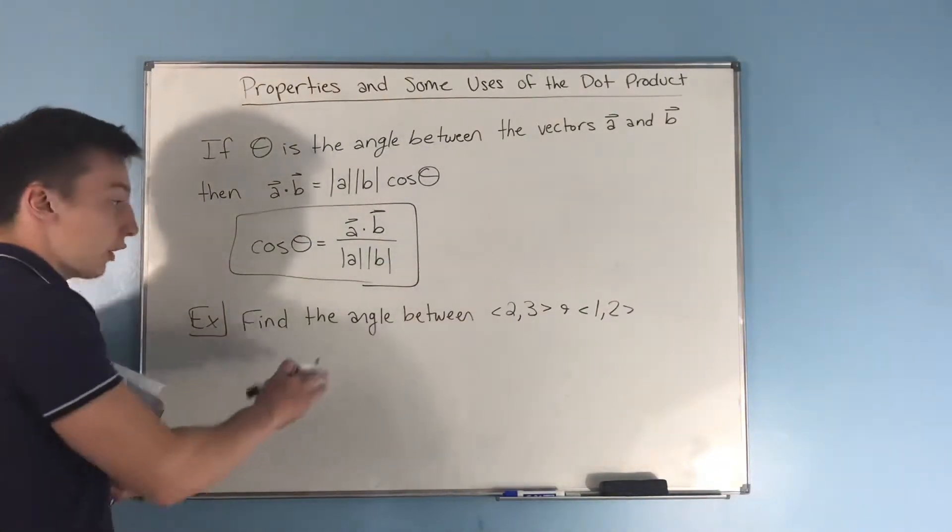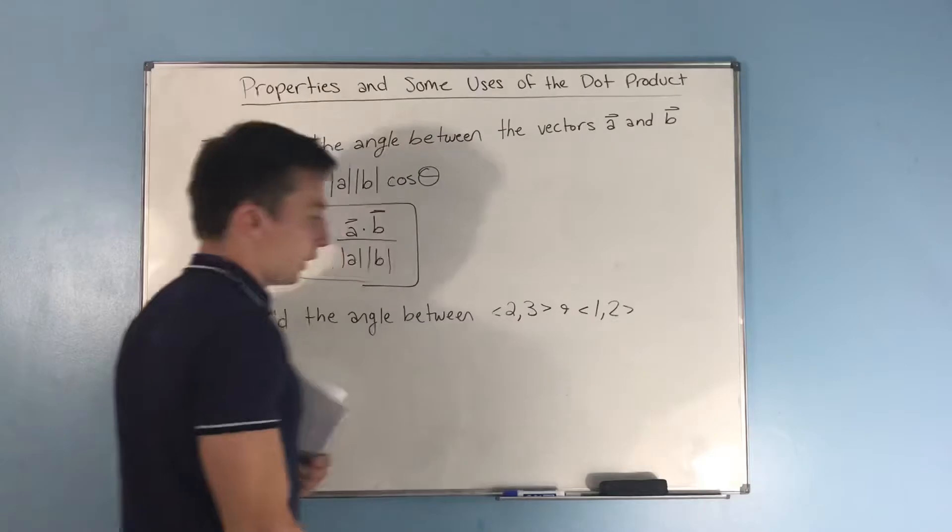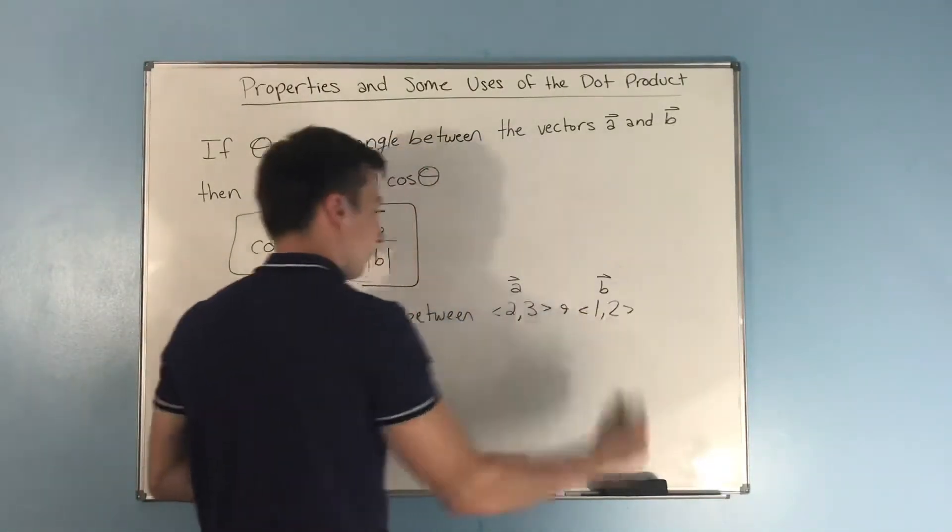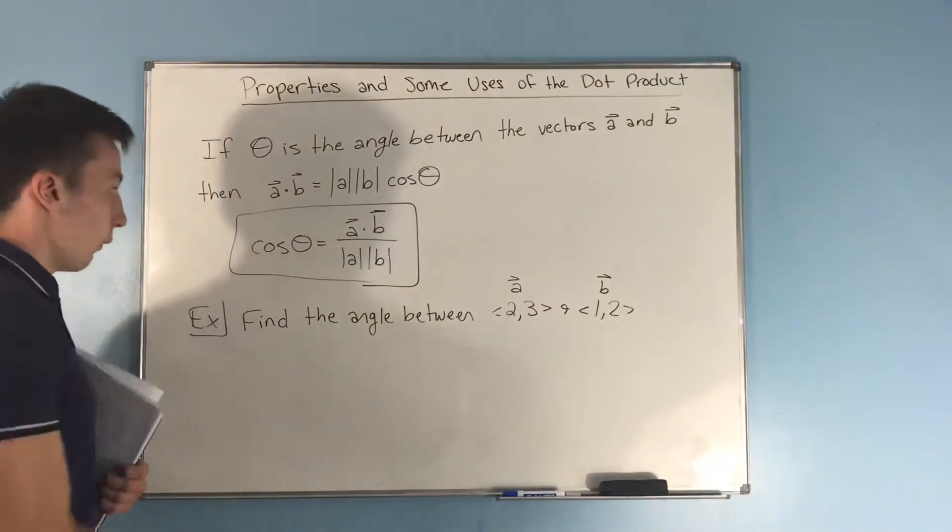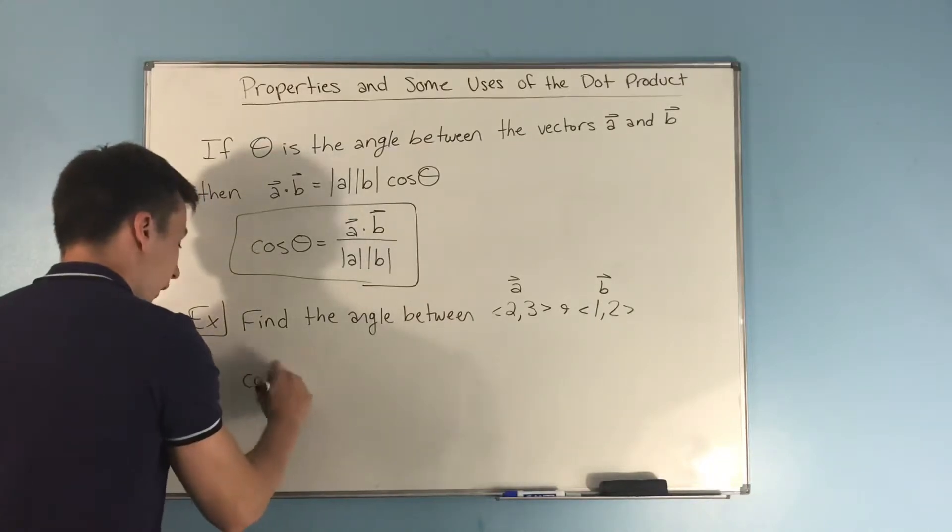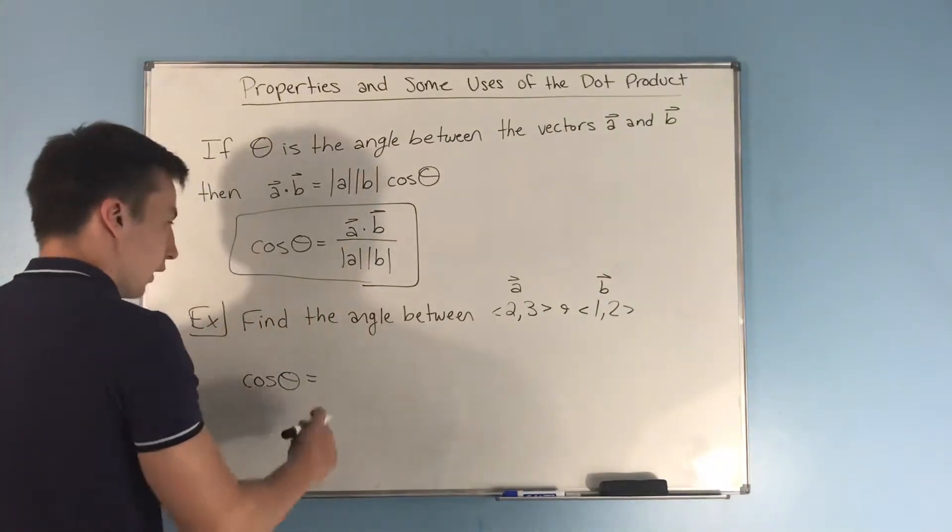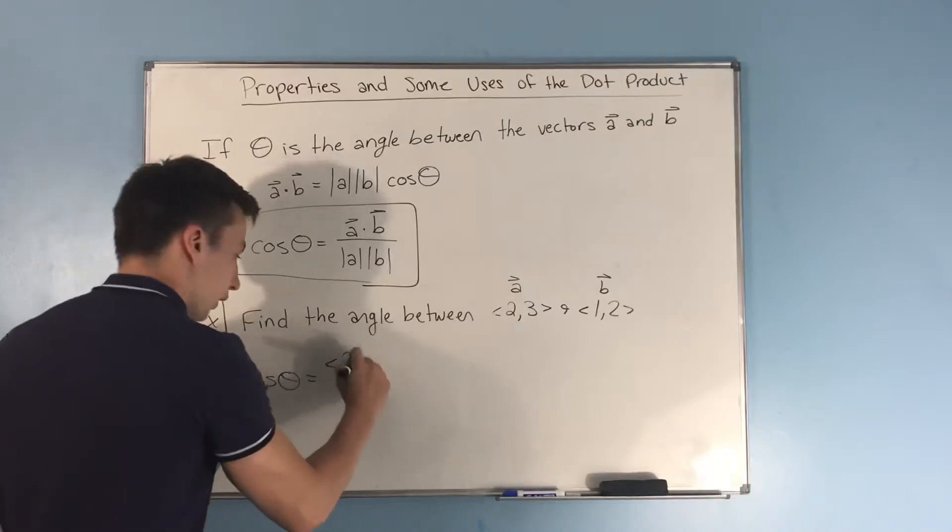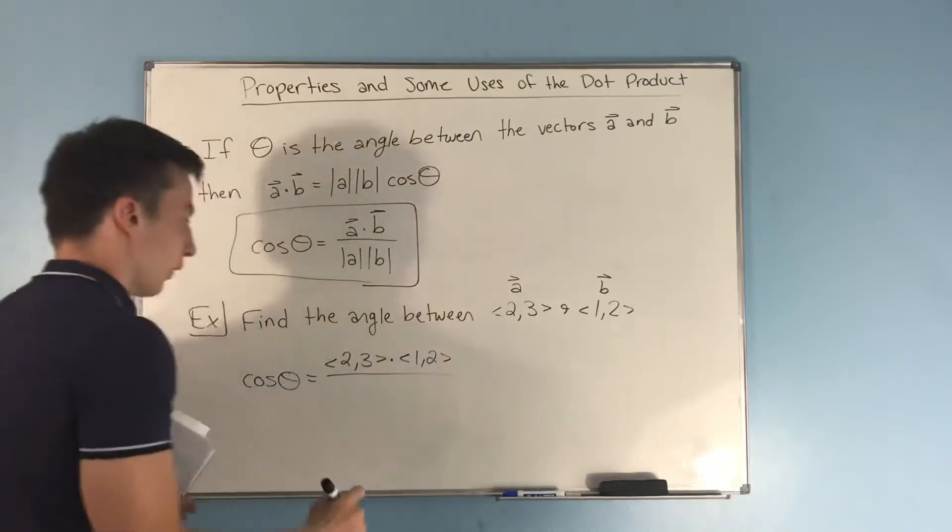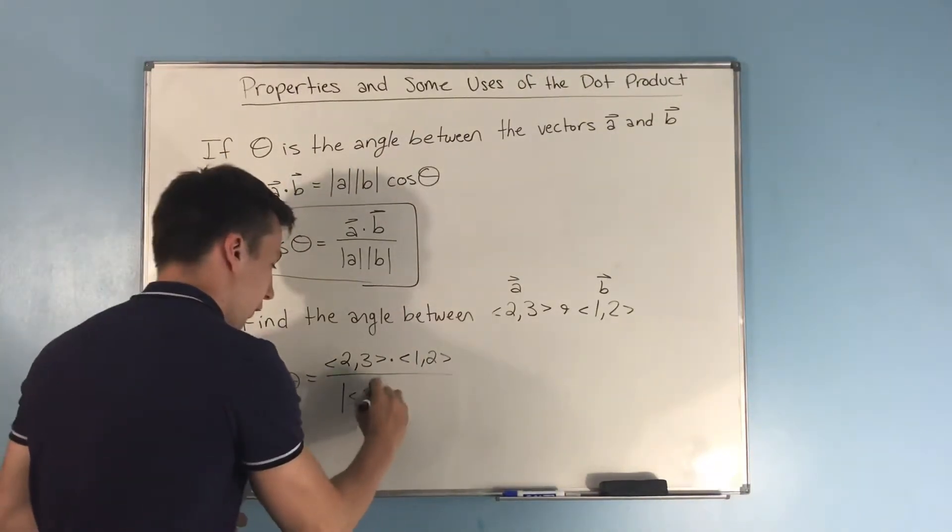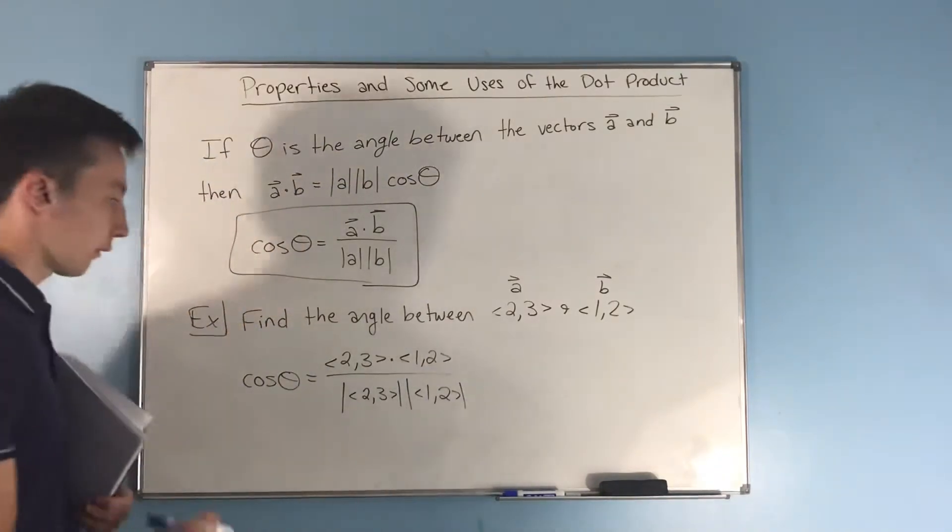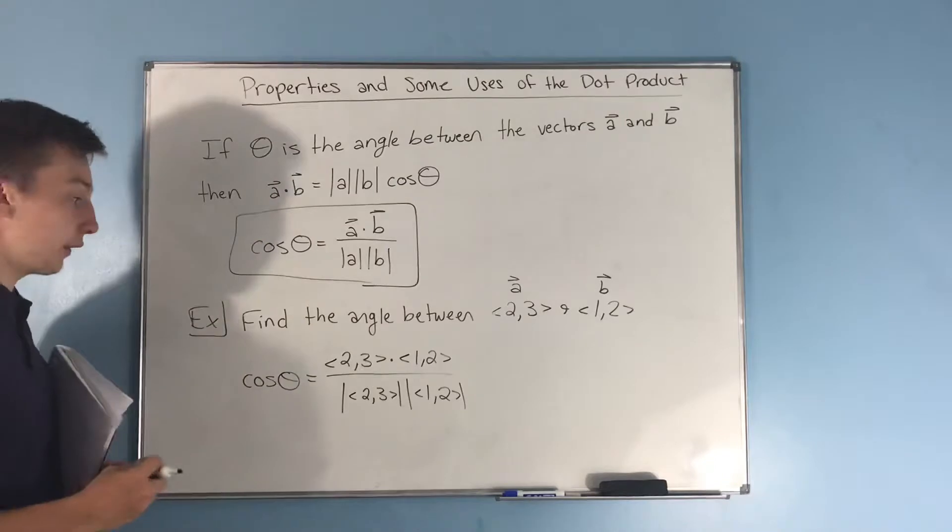So we'll do one quick example of this. We want to find the angle between 2, 3 and 1, 2. Let's call this say vector a and vector b. So if we want to find the angle between these two vectors, let's just use this formula that we have up here. We're going to say cosine theta equals 2, 3 dot 1, 2, and that's going to be over the magnitude of 2, 3 times the magnitude of 1, 2. So we got to find all these now.